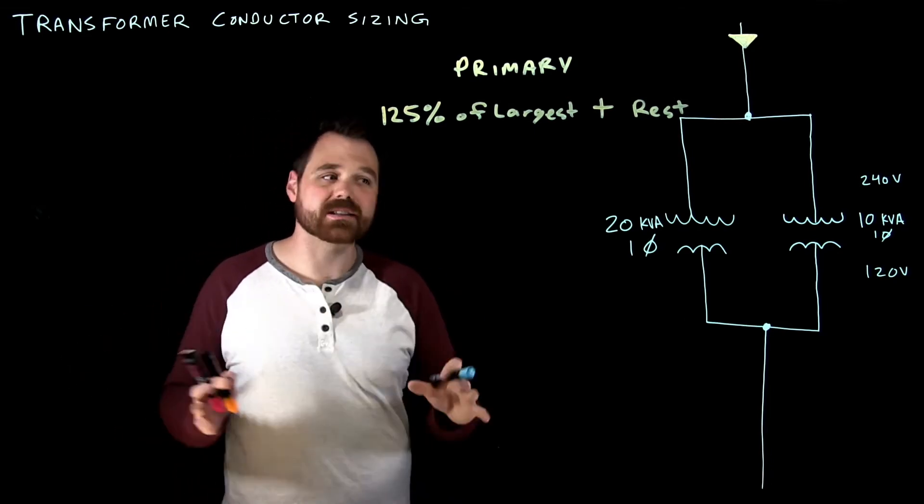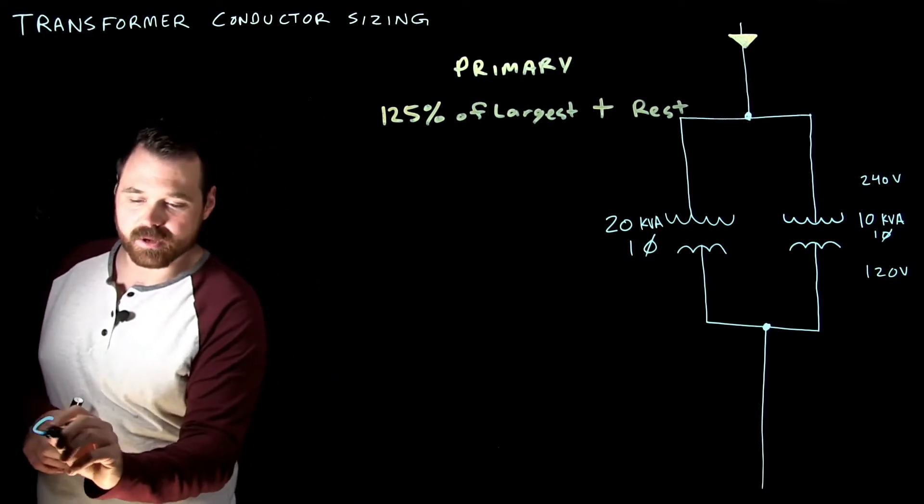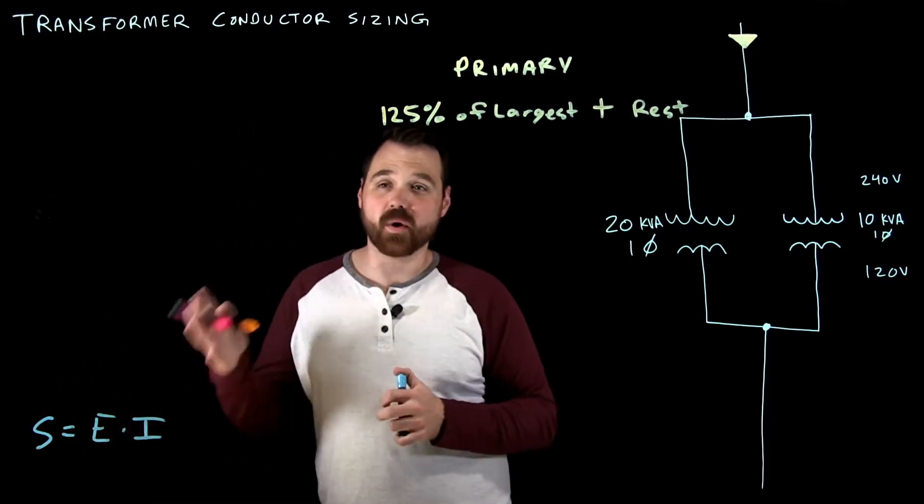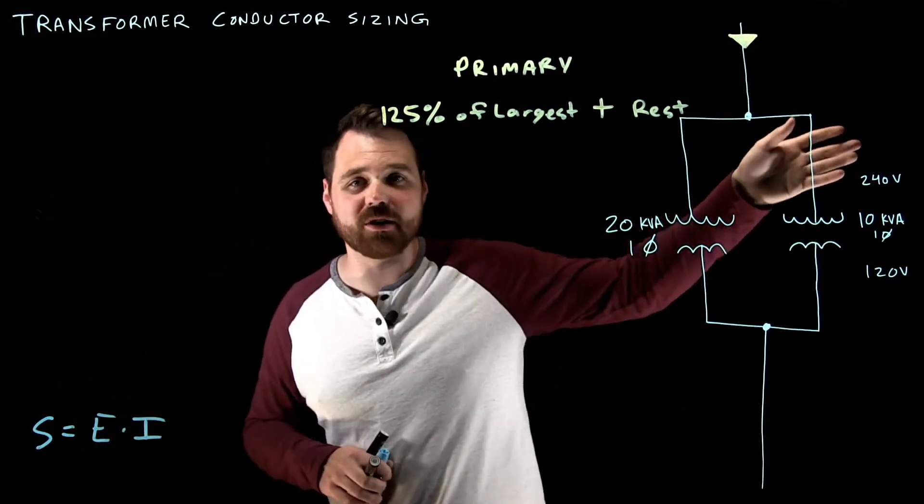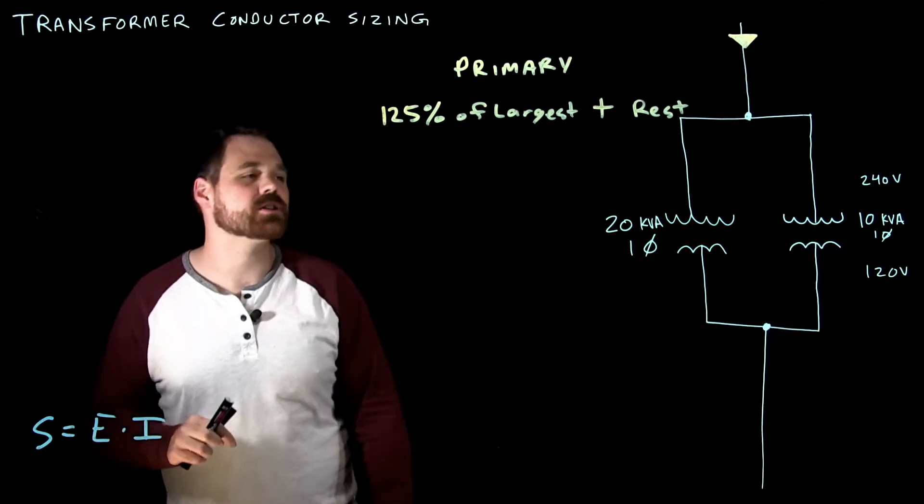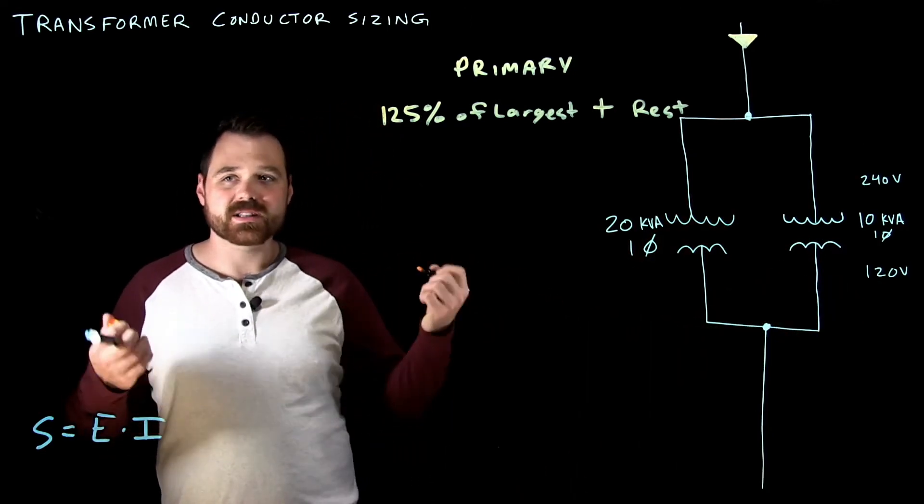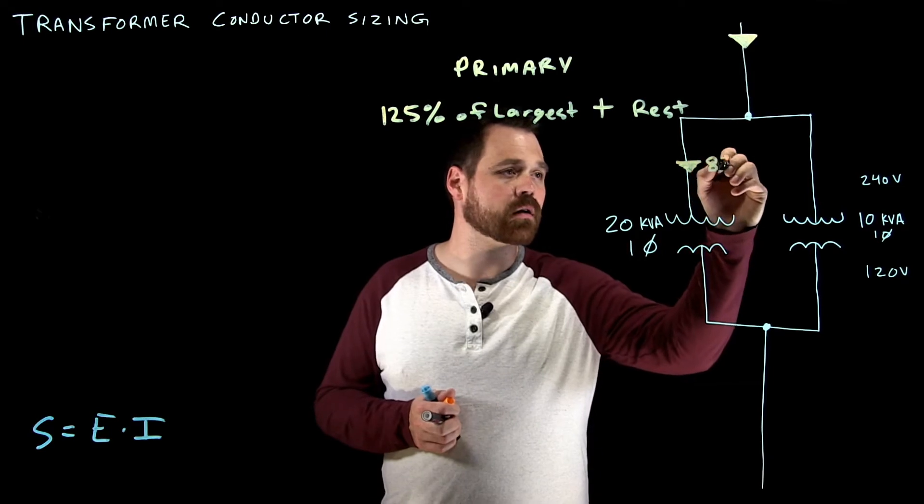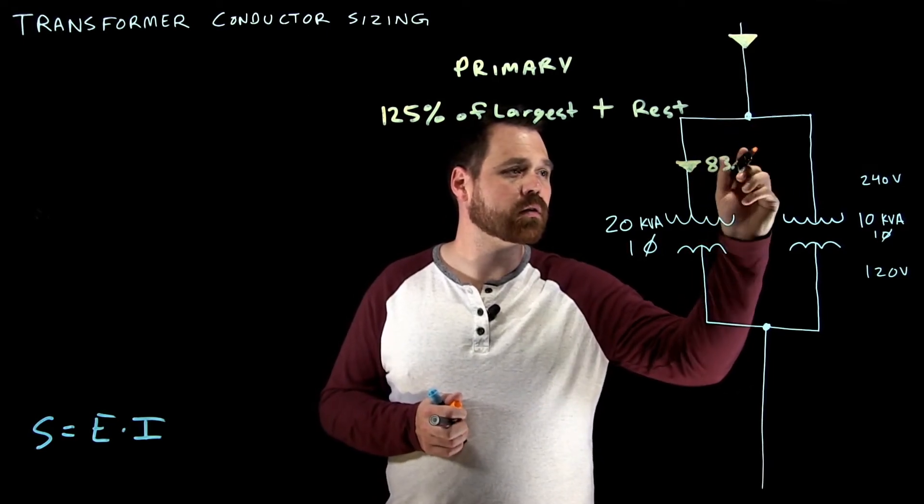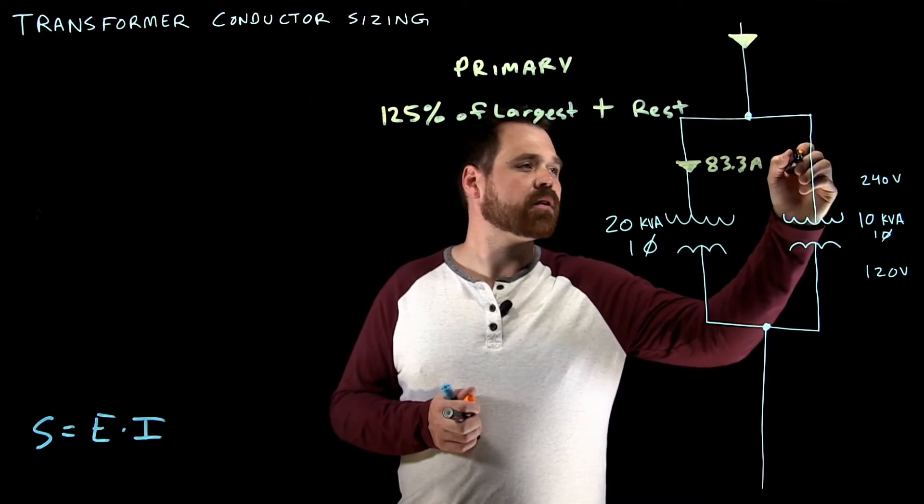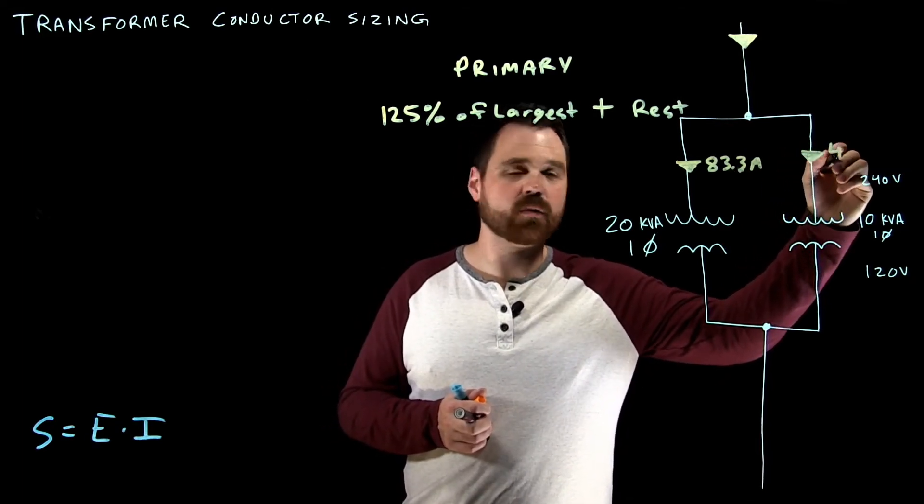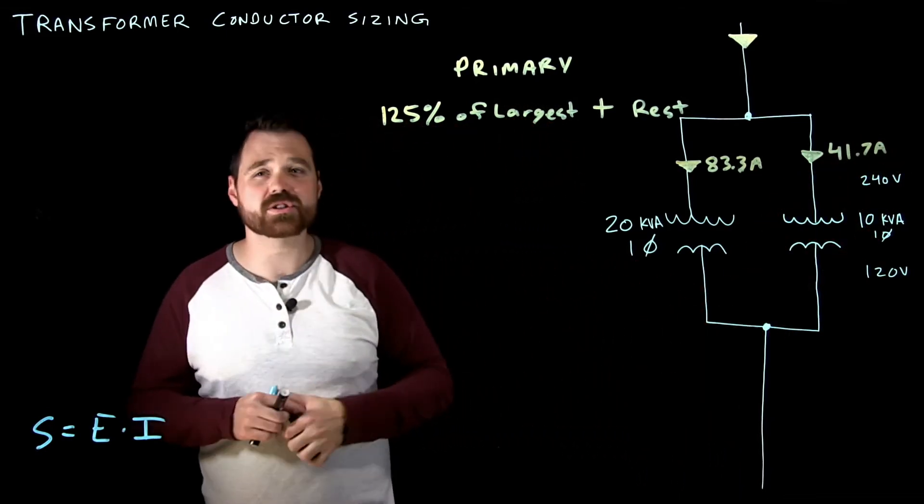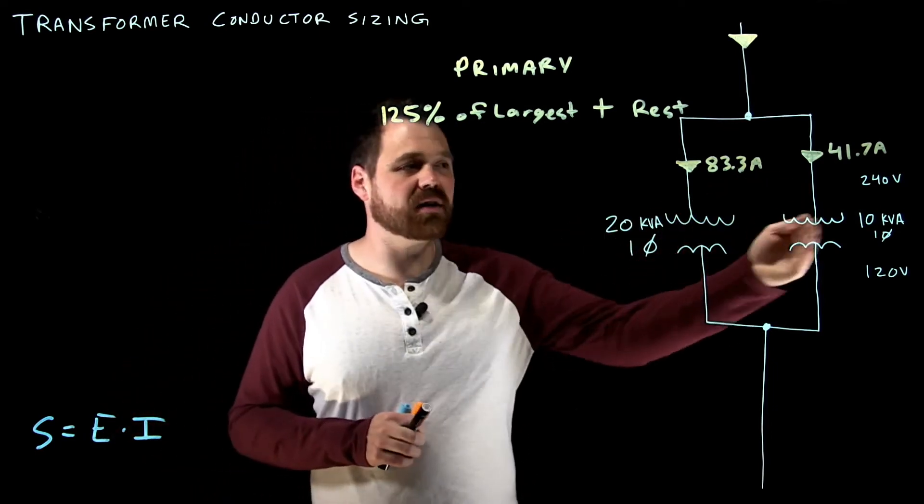So in this case, because I'm dealing with single phase transformers, now I'm going to take that formula S equals E times I, knowing my voltage on my transformer, it's a 240 volt primary, and a 120 volt secondary, so new voltages as well, I can figure out my rated current. So now in this case, I've done the math. On this transformer, I get 83.3 amps. And on this transformer, I get 41.7 amps. So those are the rated primary currents of the individual transformers.